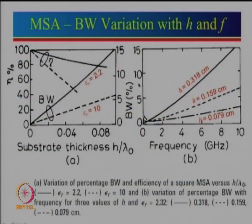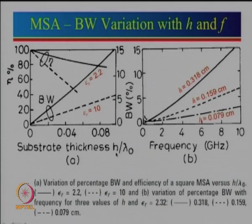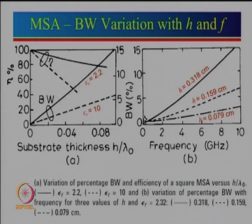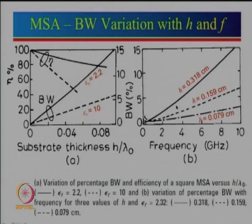Now let us look at another curve — the variation of percentage bandwidth with respect to frequency. Three different substrate thicknesses are taken: 0.079, 0.159, and 0.318. In reality, this curve is related to h/λ₀ since frequency is c/λ. Many times when you want to design an antenna — say at 3 GHz — you use this curve: at 3 GHz, drawing a vertical line for thickness 0.318, you get about 4% bandwidth. This curve is for epsilon r = 2.32.